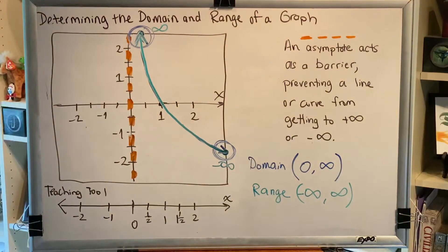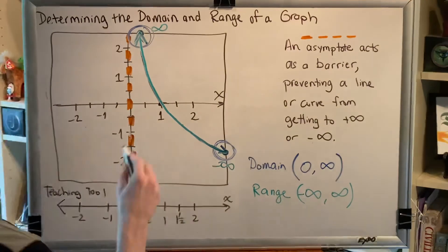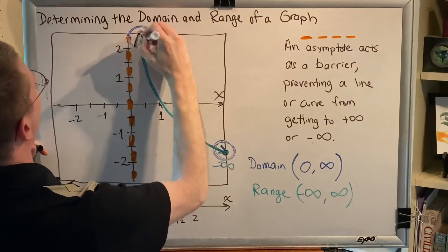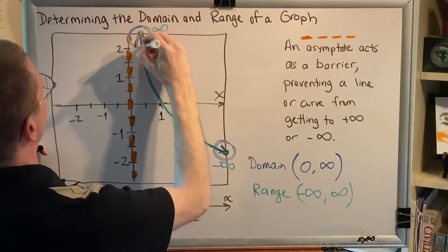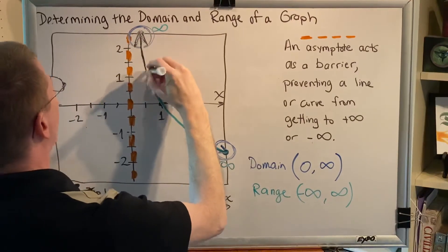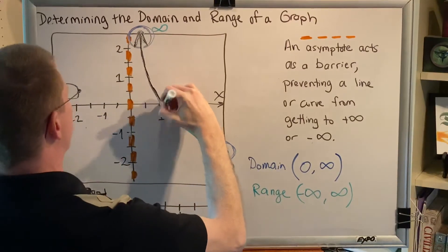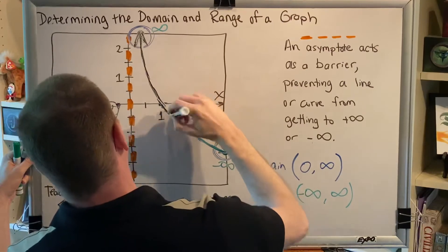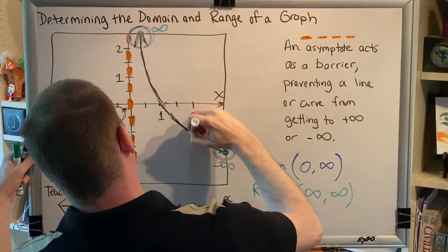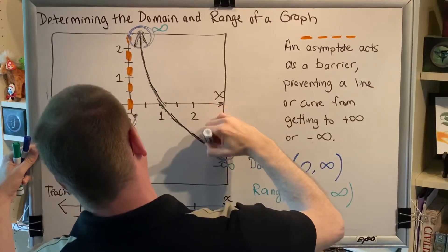I'm going to go back to talking about domain for a minute, which means I'm going to turn my curve back to the black that it was when we started. Domain is a collection of all of the x coordinates.